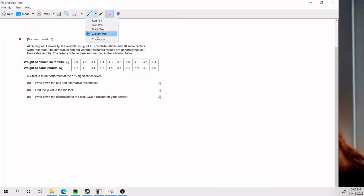All right, so for number eight, we have that at Springfield New York University, the weights in kilograms of 10 chinchilla rabbits and 10 sable rabbits were recorded. The aim, important, was to find out whether chinchilla rabbits are generally heavier than sable rabbits, and the results obtained are summarized in the following table. So a t-test, keyword t-test, is performed at the 5% significance level. Everything I put in yellow is what is important here. Those are the buzzwords.